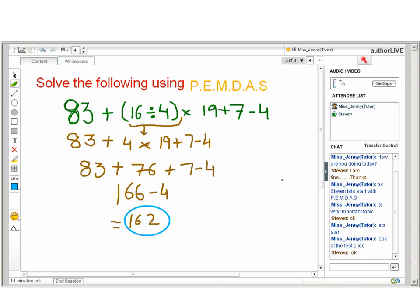Now solve multiplication and you will get 83 + 76 + 7 - 4. Now simplify by moving from left to right, and you will get your answer as 162.